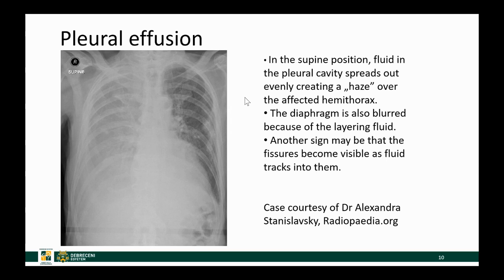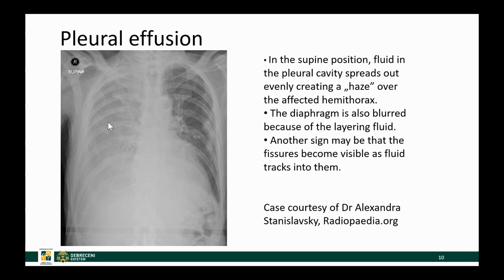Now we're back with the supine film, which as a radiologist I do not like, because a lot of disease goes undetected on the supine film unless the abnormality is striking. This patient has a lot of fluid in the right pleural cavity. You can tell by noting that the contour of the right hemidiaphragm is lost, and there is a diffuse, quite homogeneous opacity over the right lung. The fluid within the pleural space takes up the available space, so you will see added haziness over the whole lung, and sometimes you will see fluid within the fissures as well.